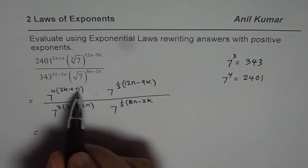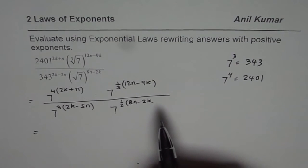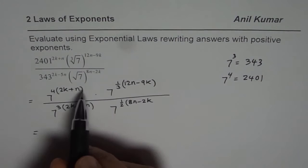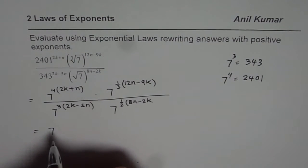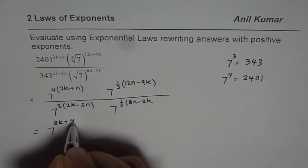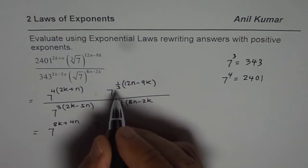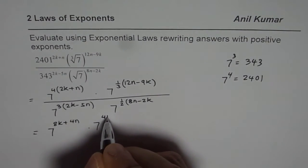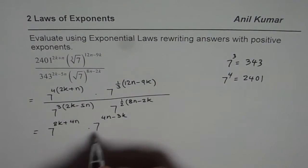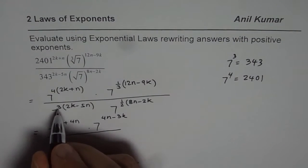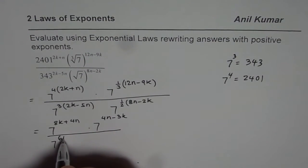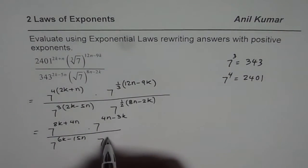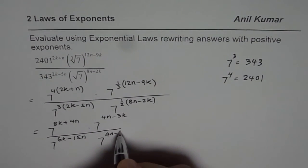Now we can actually open these brackets and combine the terms. So what I will do is, I will do it in two steps. In the first step, I will just open the brackets. So we have 7 to the power of 8k plus 4n times 7 to the power of 1 third of these values. So 1 third of 12 is 4, 4n minus 3k divided by 7 to the power of 3 times 6k minus 15n and 7 half of these values, which is 4n minus k.